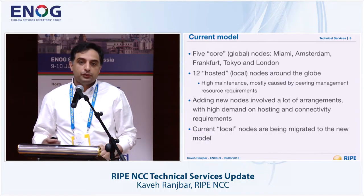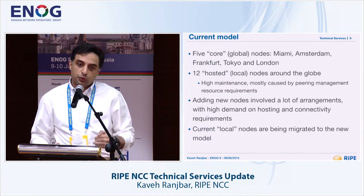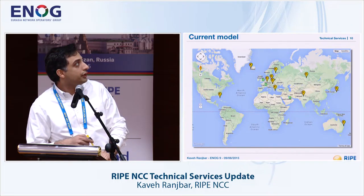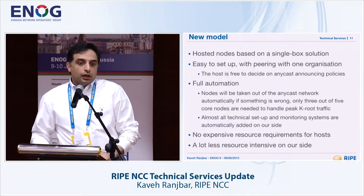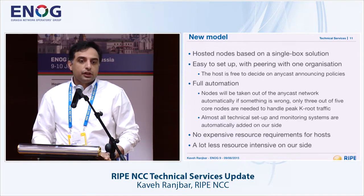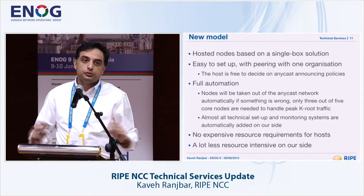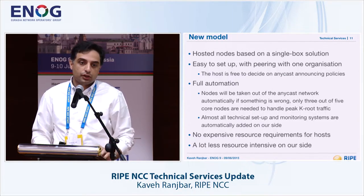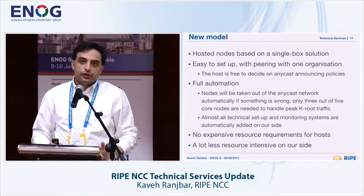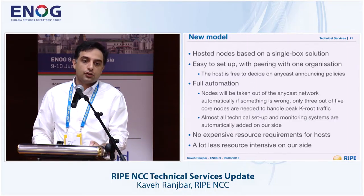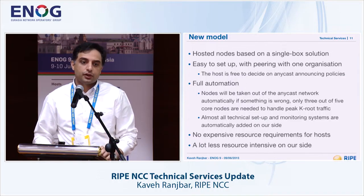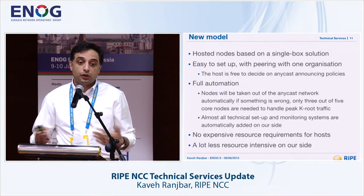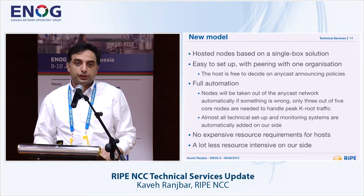We came up with a new model to expand more easily and efficiently, both financially and resource-wise, for us and for the people who want to host them. The new model is a single-box solution — one 1U or 2U Dell machine which has everything on it. The machine acts as a router, speaks BGP, and runs the DNS system. It's very easy to set up, and we only peer with the organization hosting the instance, meaning much less pressure on managing peerings. It's fully automated after setup.